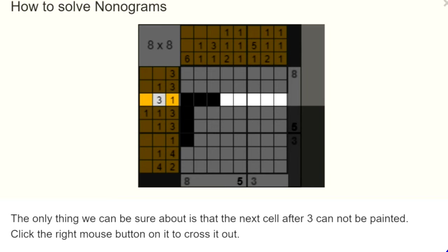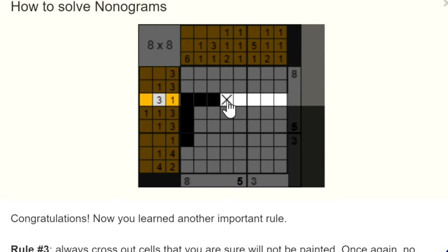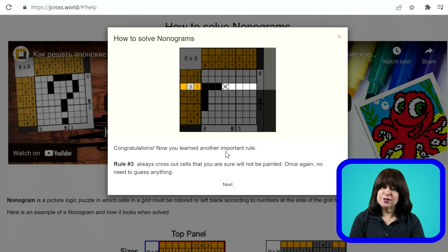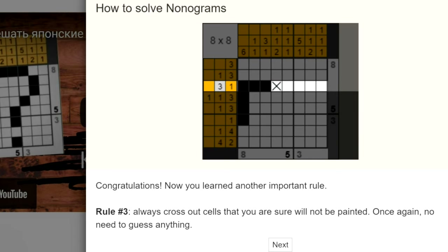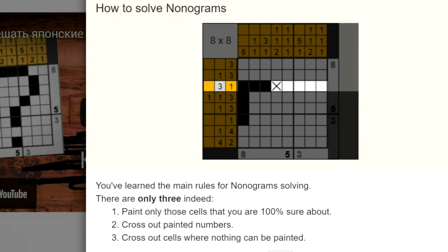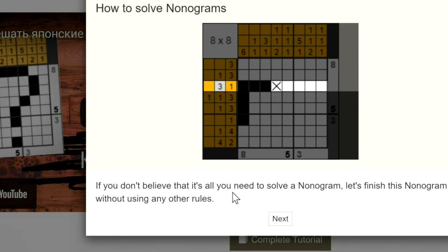Click the right mouse on that to cross it out. So you can cross it out, and it's crossed out. Congratulations — you've learned another important rule. Rule 3: always cross out cells that you are sure will not be painted. Once again, no need to guess anything. You've learned the main rules for nonogram solving — and there are only 3: 1) paint only those cells you are 100% sure about; 2) cross out painted numbers; 3) cross out cells where nothing can be painted.